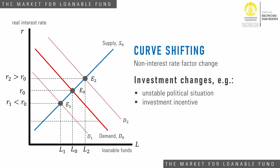With an unstable political situation, demand shifts to the left and the equilibrium real interest rate will be lower. On the other hand, with incentive policies, demand shifts to the right, resulting in a higher equilibrium real interest rate.